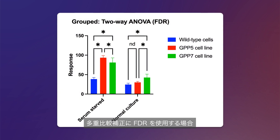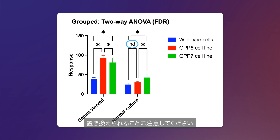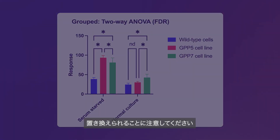If you use the false discovery rate for the multiple comparison correction, the new one-or-none p-value style is always used. Note that in this case, ns is replaced with nd to indicate no discovery.